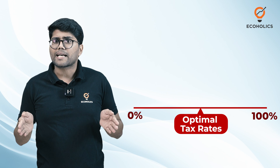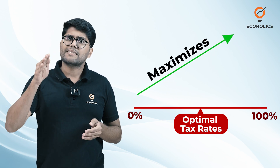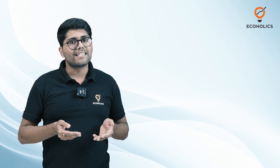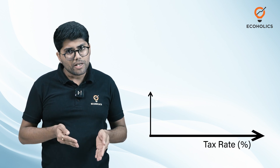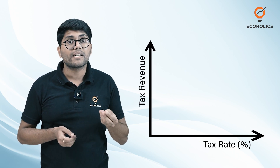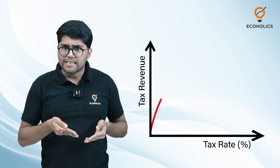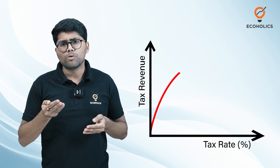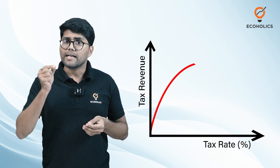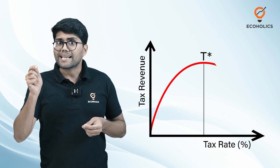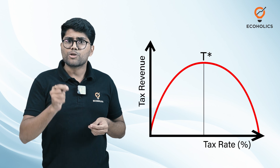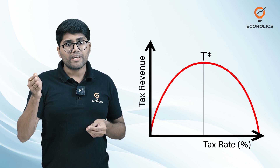However, there is one optimal tax rate between both these extremes that maximizes revenue collection. Let's draw the curve and understand. On the x-axis we have the tax rate and on the y-axis we have the tax revenue. As the government increases the tax rate, the tax revenue also increases until it reaches a point T*. Beyond T*, as the tax rate is increased, the tax revenue starts to fall.